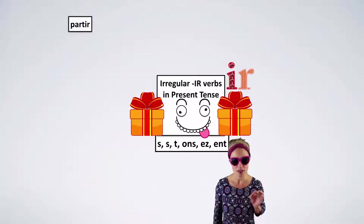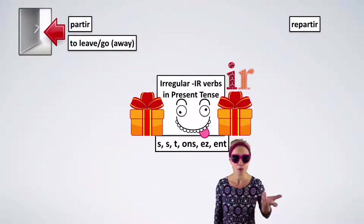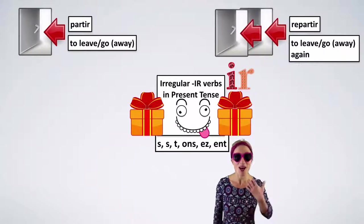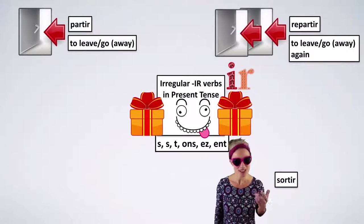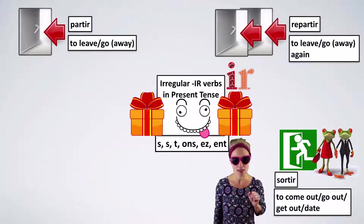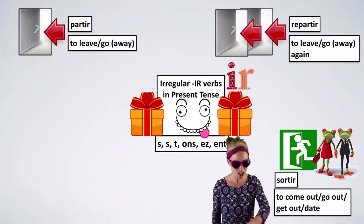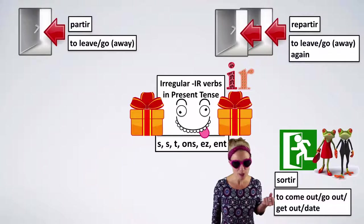Let's look at these verbs. What do they mean? Partir — to leave, to go away. We are leaving through that door. Repartir — to leave, to go away again. Sortir — it means several things: to come out, to go out, to get out. If you want to get something out of your handbag, for example. Sortir also means to date, to go out with somebody.